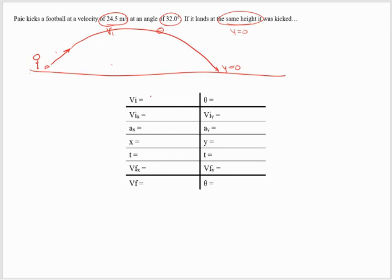My initial velocity is 24.5, my angle is 32 degrees, and to split this into X and Y, I have to do the components. To change this into VY and VIX values, I'm going to do 24.5 times the cosine of the angle, 32, and that gives me 20.4 meters per second.